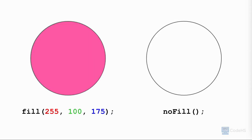We can also change the color of shapes. The fill function sets the color used to fill shapes. All shapes drawn after the fill function will be filled with the fill color. We can pass a predefined color, grayscale value, or RGB values to the fill function.